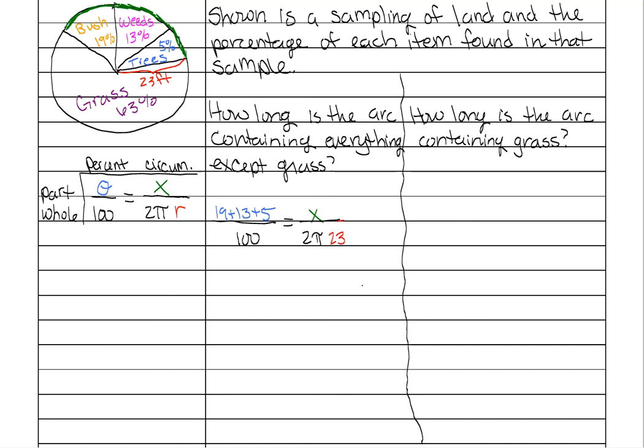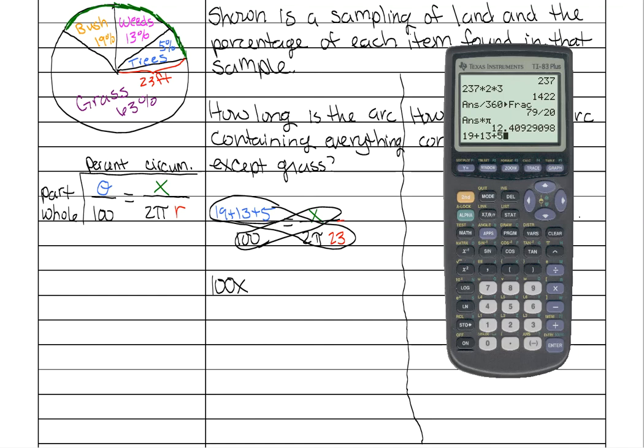So we cross multiply, x times 100 is 100x. And then we're going to have to multiply all of this. It would be easier if we figured out what exactly our portion of percentage is. 19 plus 13 plus 5 is 37.